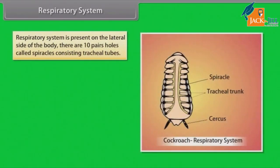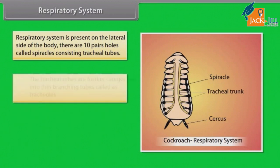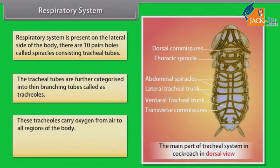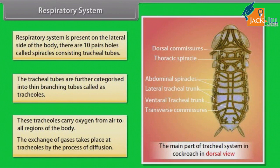Respiratory System: The respiratory system is present on the lateral side of the body. There are ten pairs of holes called spiracles consisting of tracheal tubes. The tracheal tubes are further categorized into thin branching tubes called tracheoles. These tracheoles carry oxygen from air to all regions of the body. The exchange of gases takes place at the tracheoles by the process of diffusion.